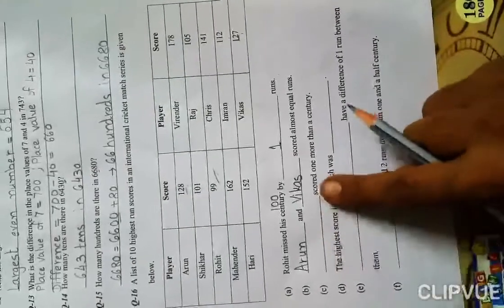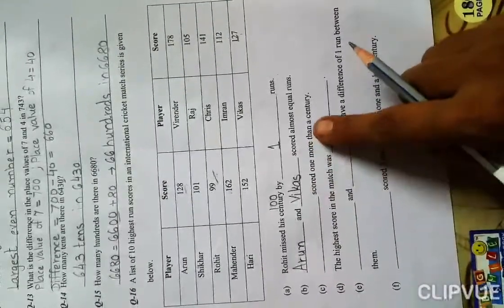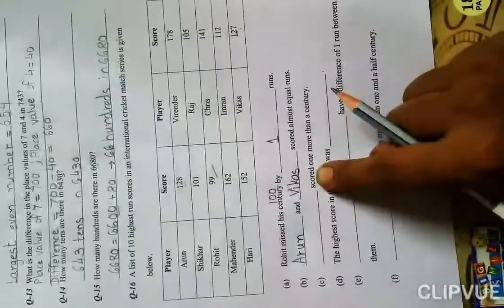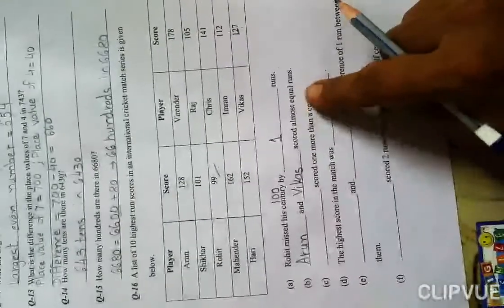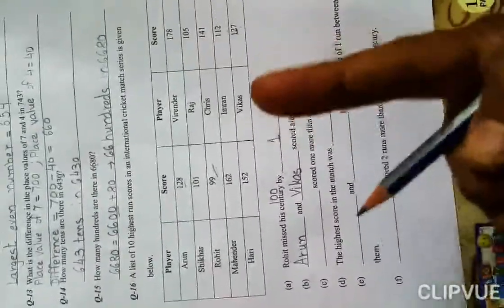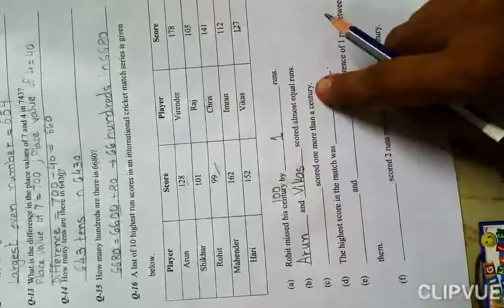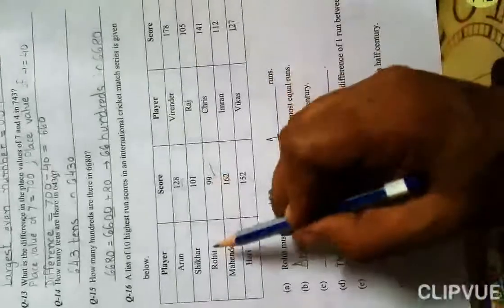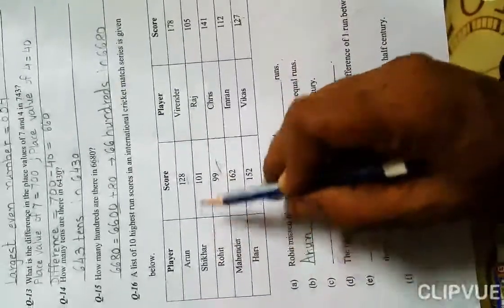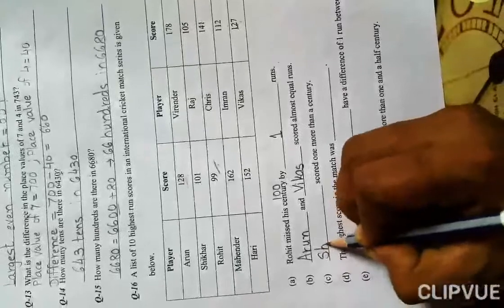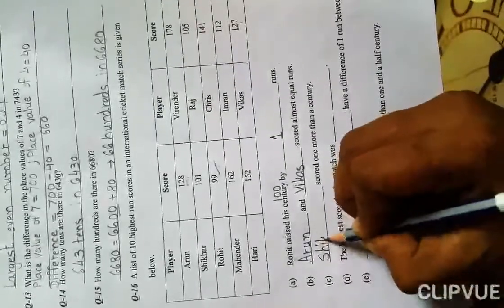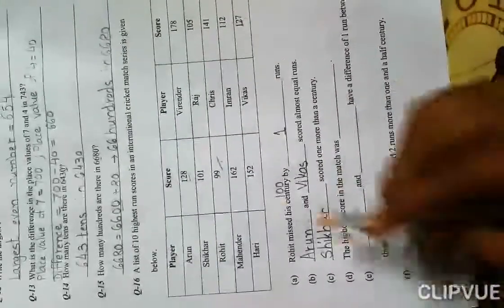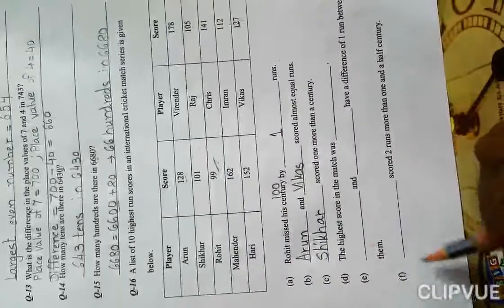Blank scored one more than a century. Which player scored just one run more than a century? Century means 100. 100 plus 1 equals 101. Whose runs are 101? Sikhar. So we write Sikhar here. Check the spelling from there, no spelling mistakes should be there.